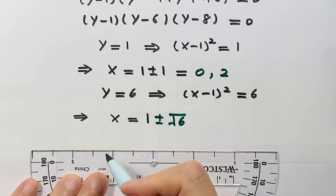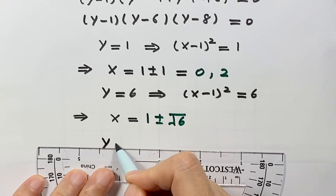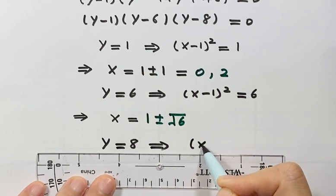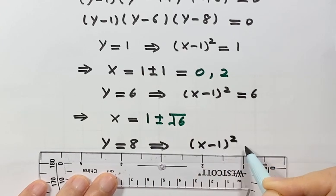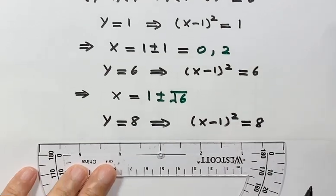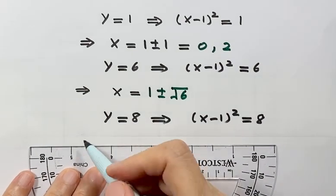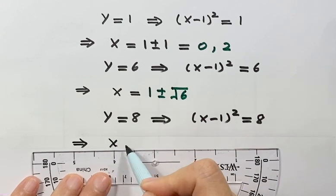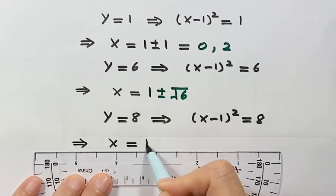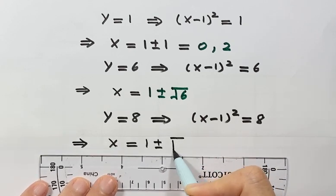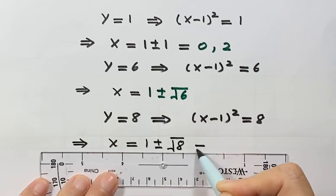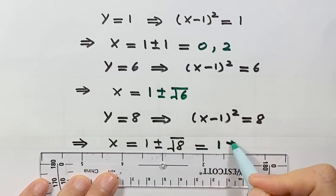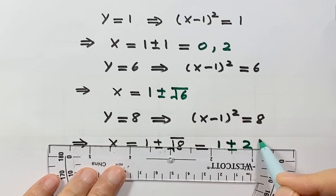The third solution for y is y equals 8. So then we have x minus 1 squared equals 8. The solution for x is x equals 1 plus or minus square root of 8, which we can simplify to 1 plus or minus 2 square root of 2.